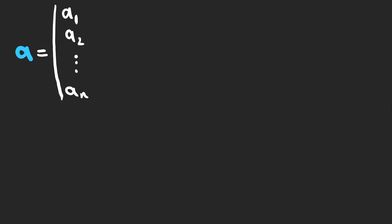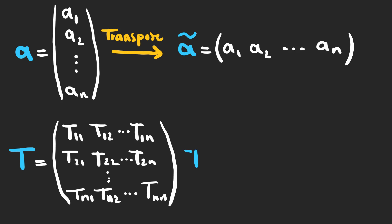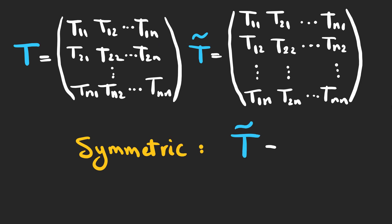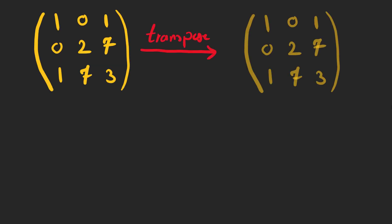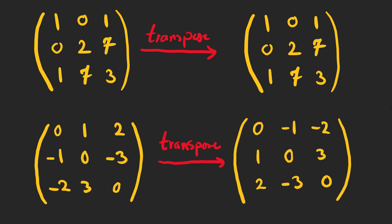For a column matrix A, we can define A-transpose, written as A-tilde, which yields a row matrix. For matrix T, we find its transpose by interchanging rows and columns — note that the main diagonal stays where it was. A matrix is symmetric if its transpose is unchanged, and anti-symmetric if the transpose reverses the sign. For example, the transpose of one matrix is exactly the same (symmetric), while another yields a similar matrix with signs reversed (anti-symmetric).